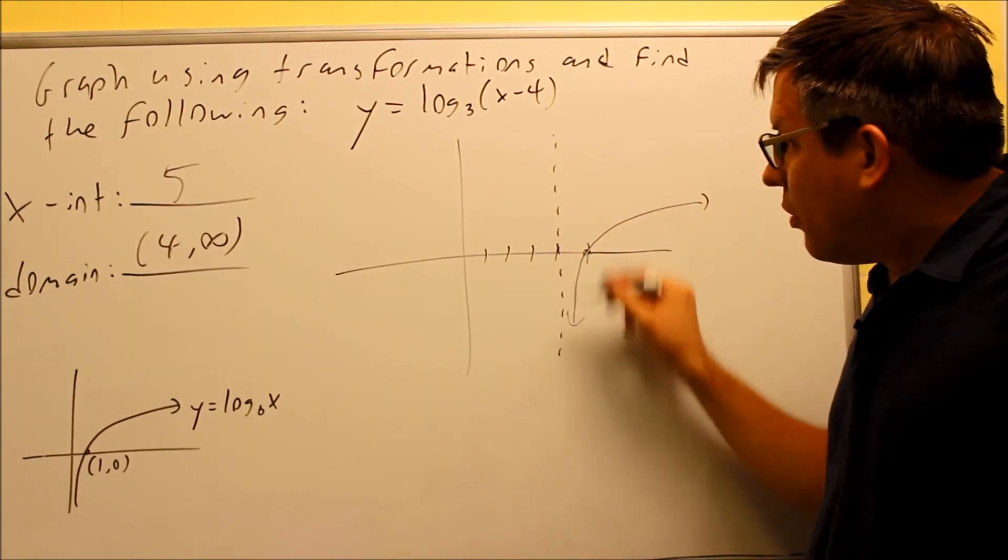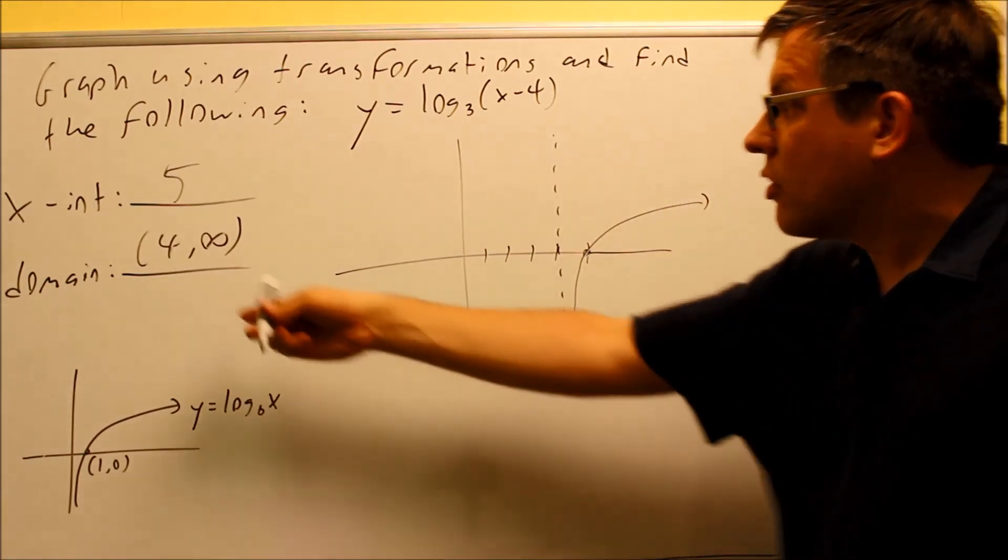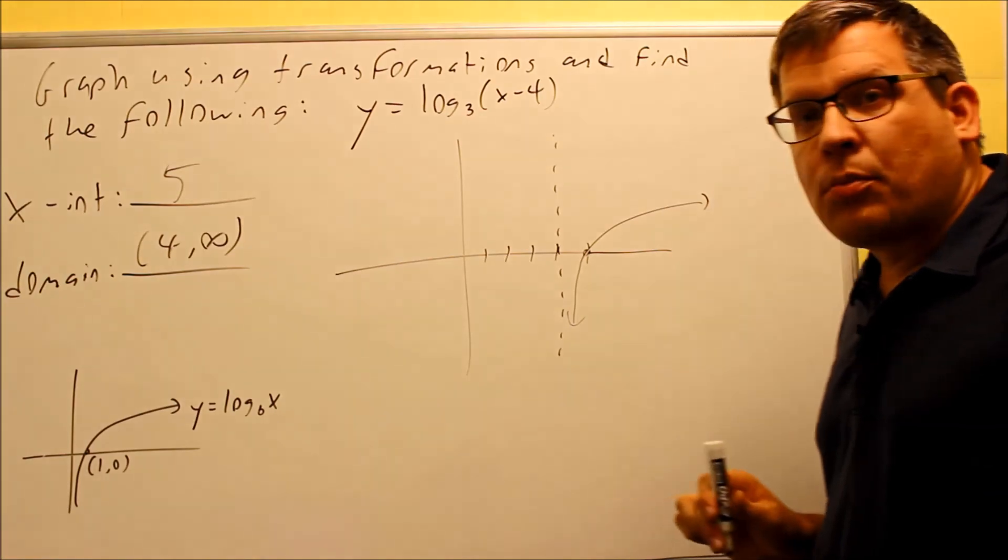It's going to come very, very close to it, but it'll never reach it. So therefore, whenever you have vertical asymptotes, you're never going to include that number. So we always want to make that a parenthesis.